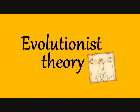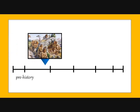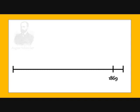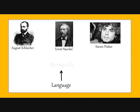Evolutionist Theory. Thousands of years after Charles Darwin created the theory of evolution of the human being, he inspired linguists to focus the origin of language on the same basis as evolutionism. It was namely August Schleicher who developed this theory. Names like his, Ernst Haeckel and Steven Pinker supported the idea that language originated from human imitations of animals' mating calls — calls to reproduce.